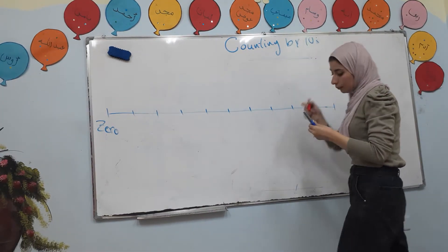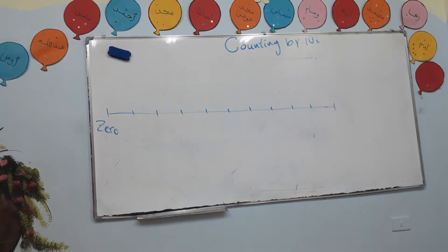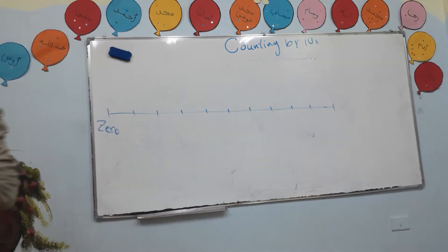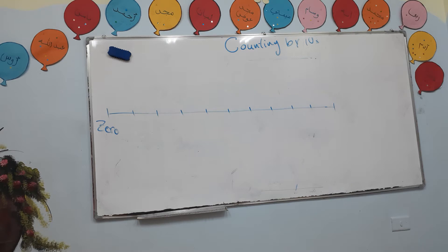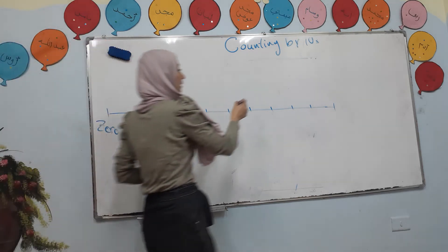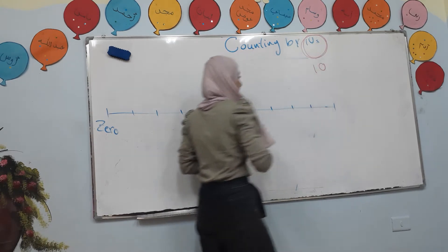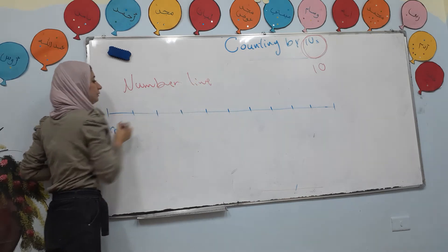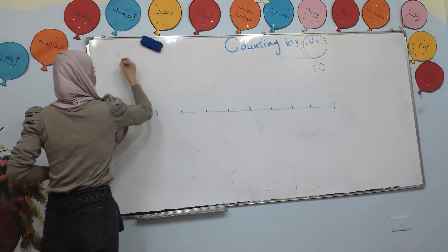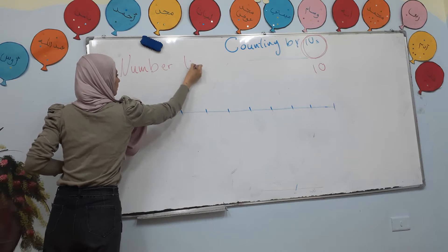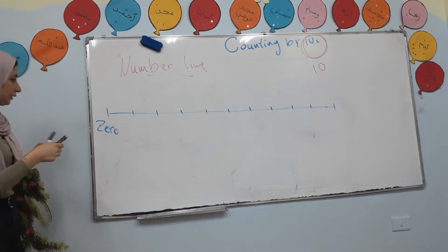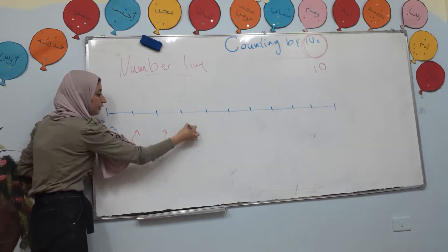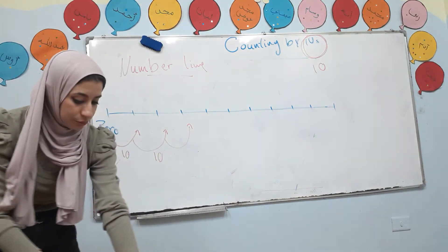Counting by what? Counting by tens! Today we will talk about counting by tens. Let's see how we can count by tens — by what? By tens! If we start from this number line, each time I will jump ten, and another ten, and another ten.